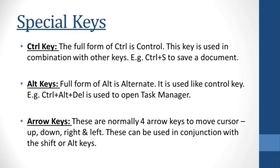Now it is very important to know about special keys of the computer keyboard. First is the control key. The full form of CTRL is control. This key is used in combination with other keys. For example, Control+S is used to save a document. Next, the Alt key — full form of Alt is alternate. It is used like the control key. For example, Control+Alt+Delete is used to open Task Manager.